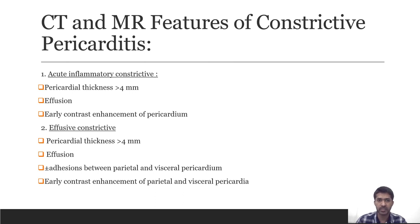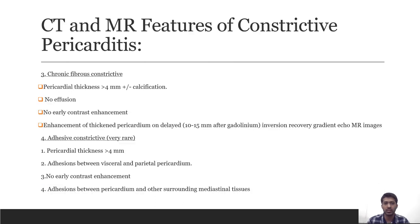CT and MRI features by stage: In acute inflammatory constrictive pericarditis, pericardial thickness is more than 4 mm with effusion and early enhancement of the pericardium. In effusive constrictive pericarditis, thickness is more than 4 mm with effusion and adhesion between parietal and visceral pericardium, and early enhancement of both layers. In chronic fibrous constrictive pericarditis, thickness is more than 4 mm with or without calcification, no effusion and no early enhancement; however, the thickened pericardium shows delayed enhancement on inversion recovery sequences. In adhesive constrictive pericarditis, which is very rare, thickness is more than 4 mm with adhesion between visceral and parietal pericardium and surrounding mediastinal structures, and no early enhancement.